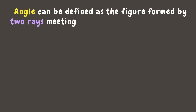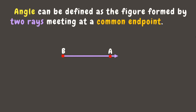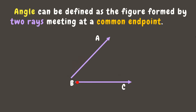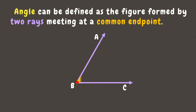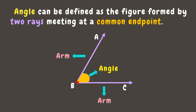But wait, do you know what angle means? An angle can be defined as the figure formed by two rays meeting at a common endpoint. For example, we have here ray BA and ray BC. If we join these two rays together, we form an angle. The two rays are called the sides or arms of an angle.